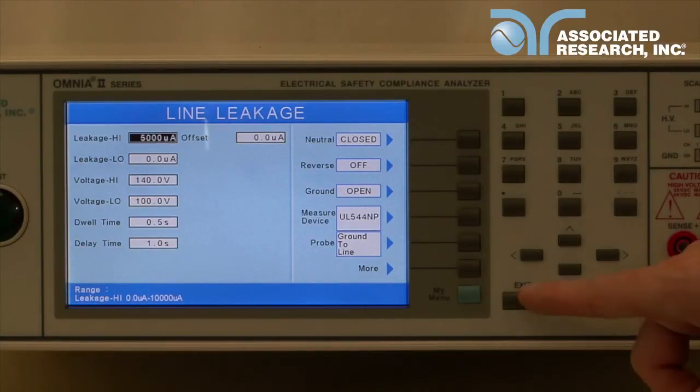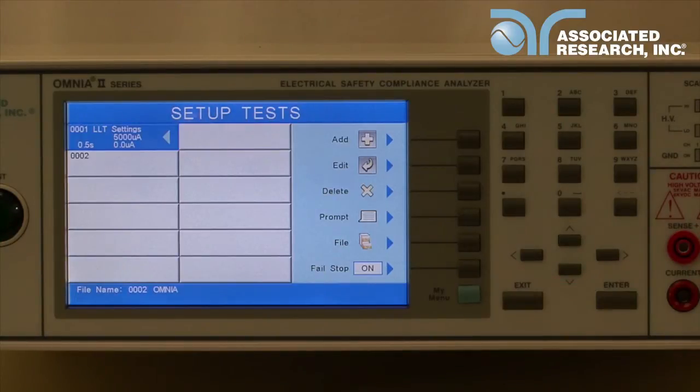Once all of your parameters have been set, press the exit key to go back to the setup tests window. You will now see your line leakage test in the first test location.